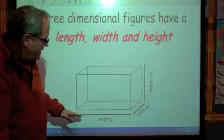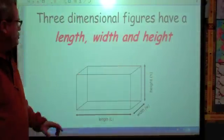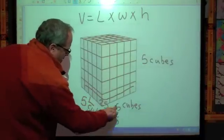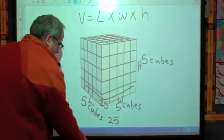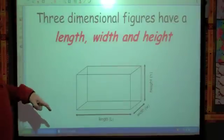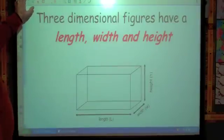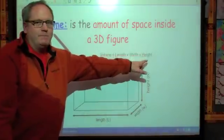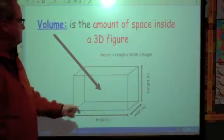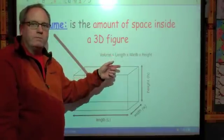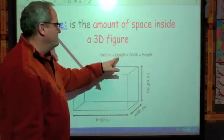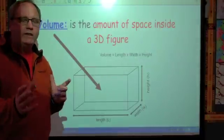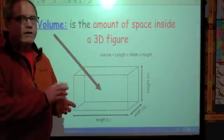As you can see here, this box has a length, it has a width, and it has a height — just as you saw in this box. Three-dimensional objects have a length, a width, and a height. To figure out the volume of a three-dimensional figure, you multiply the length times the width times the height to get the volume. Now, it doesn't matter which order you multiply them. I can multiply height times length then width, or width times length times height, or length times width times height. You're still going to come out with the same answer.